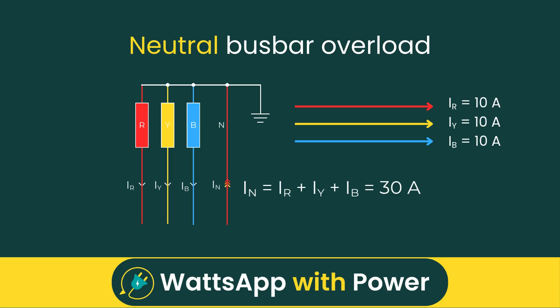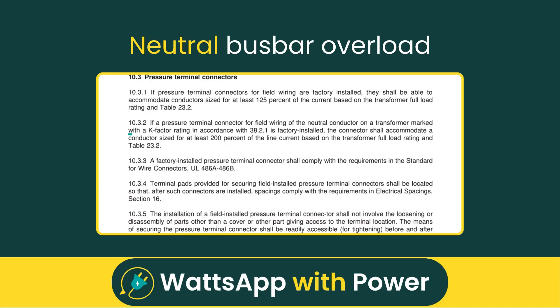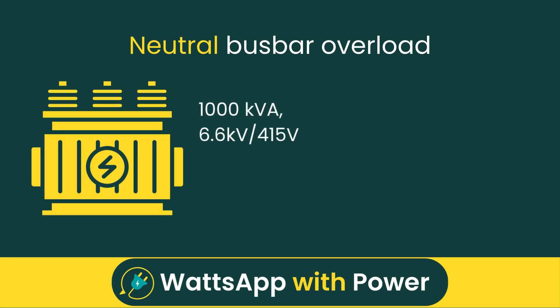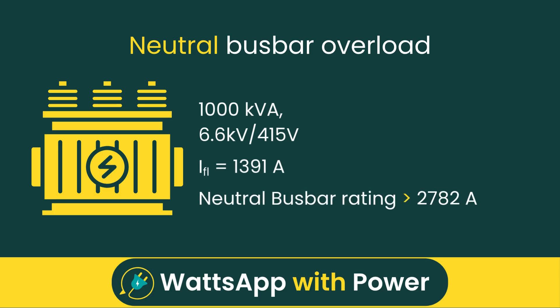To deal with this, UL 1561 mandates that K-factor rated transformers must have a neutral bus bar conductor sized for at least 200% of the line current based on the transformer's full-load rating. For instance, a 1000 kVA transformer with a 415-volt secondary has a full-load line current of approximately 1391 amps. So its neutral bus bar must be sized to handle at least 2782 amps, ensuring safe operation even under heavy third-order harmonic loading.